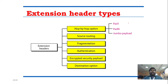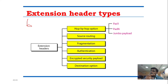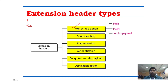Now let's talk about extension headers. This is something that does not exist in IPv4 — it is a new concept in IPv6. There are six extension headers: hop-by-hop option, source routing, fragmentation, authentication, encrypted security payload, and destination option. The hop-by-hop option means that data will go through all routers and you can access all routers using this particular header.